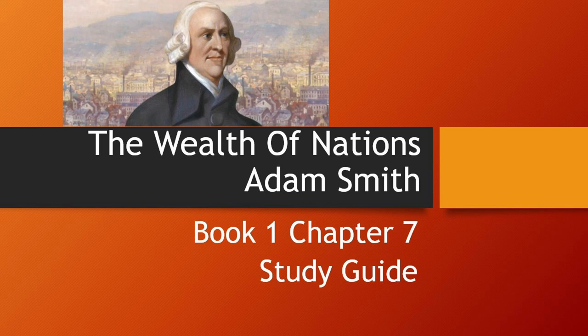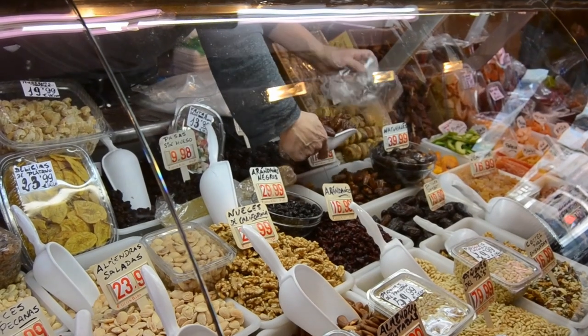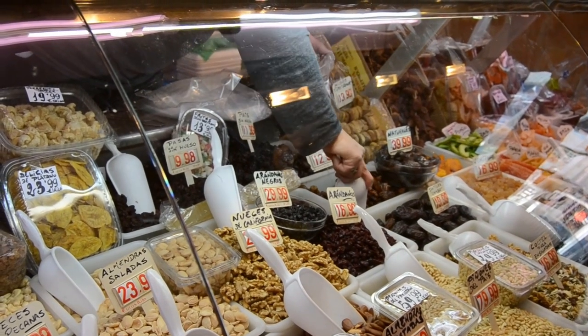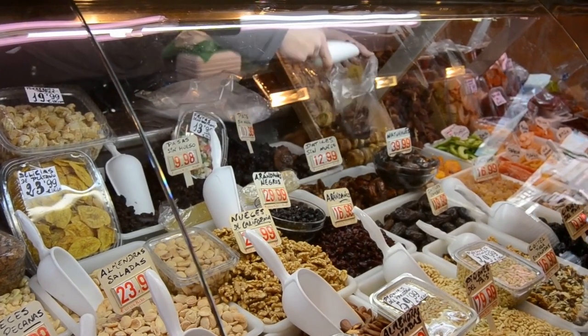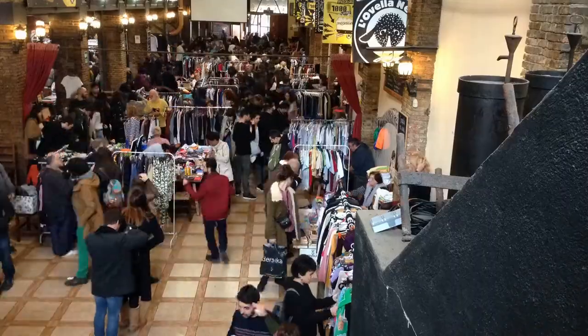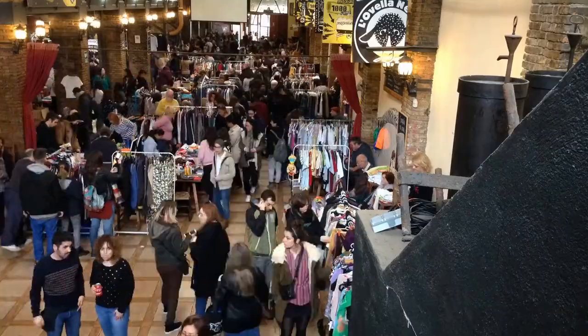Hello and welcome back. In Chapter 7 of The Wealth of Nations, Smith introduces us to one of the most important concepts in economics: supply and demand. He does this by talking about what he calls the natural price and the market price of a commodity. This builds on the idea of prices he introduced in Chapter 5.